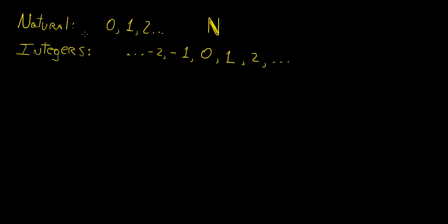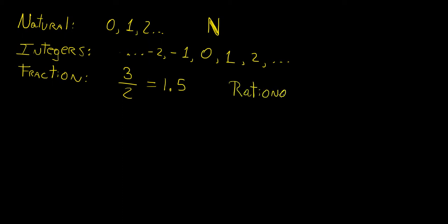The integers are a much larger set than the natural numbers, and this is what we normally use to define pretty much any kind of number that we encounter in mathematics. So if you have something like a fraction, for example, this is something that we would call a rational number, because a rational number is in between integers. For example, the fraction 3 over 2 is the same as 1.5, and since this is not a whole number, we call it a rational. The letter we use to refer to the integers is Z, and for the rational numbers we use Q.